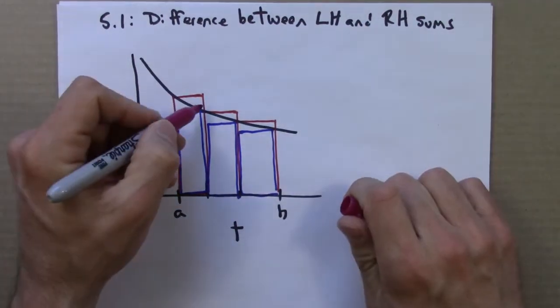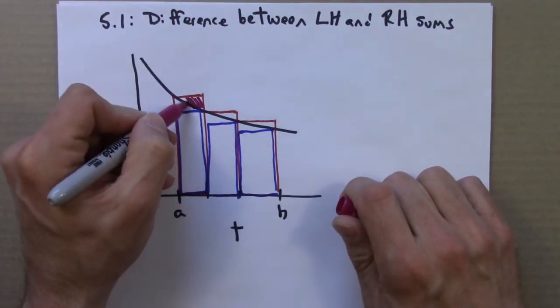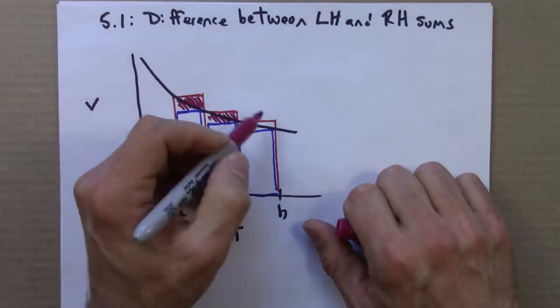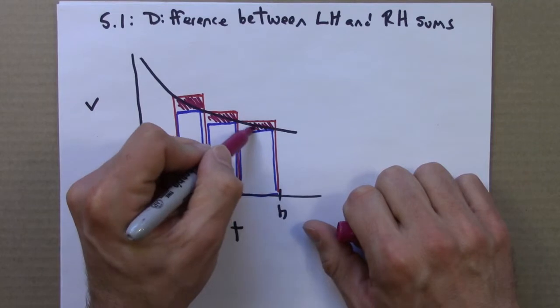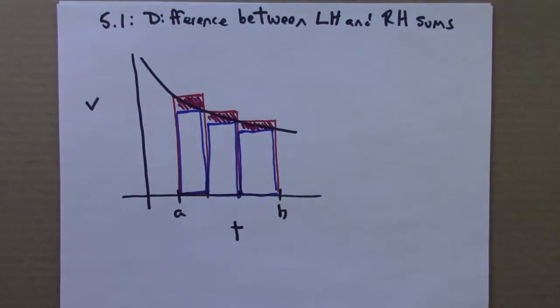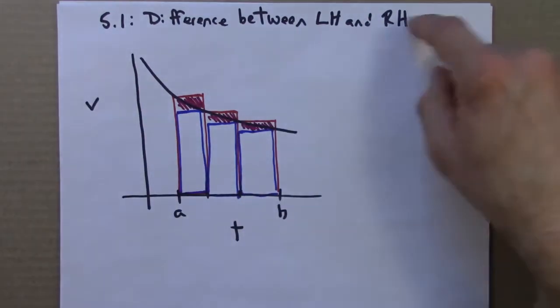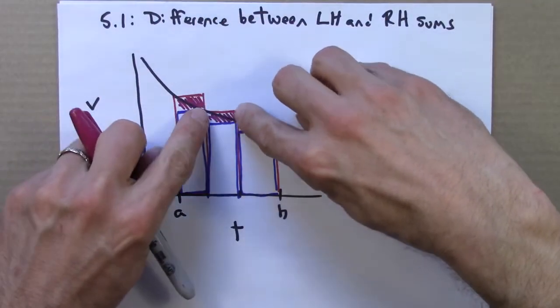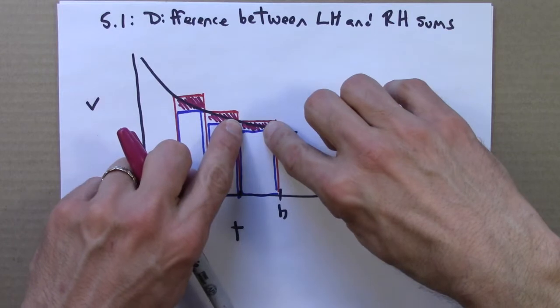And I'll shade this in in this sort of purple, maroonish thing. There's that, and there's that. So the difference between the left-hand sums and right-hand sums is this little purple area plus this little purple area plus that little purple area.